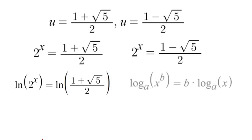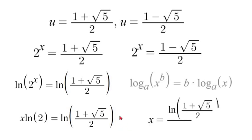So we'll have x natural log of 2 and everything on the right side stays the same. Now lastly all we need to do is divide by natural log of 2 so that we can get x by itself. So our final answer will be x equals natural log of 1 plus square root of 5 over 2 all over natural log of 2.